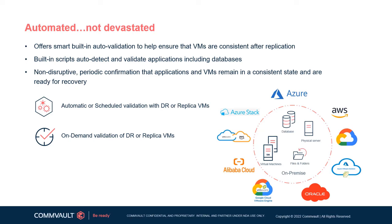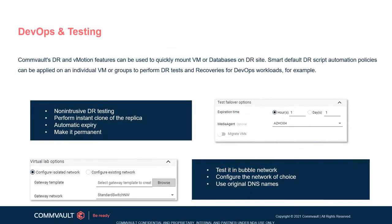This provides customers with confirmation that applications and VMs are in a consistent state and ready to go for any disaster situation. Automation can empower organizations with the ability to perform unlimited DR tests and validation through the use of DR script automation.